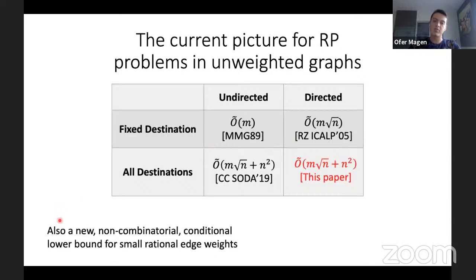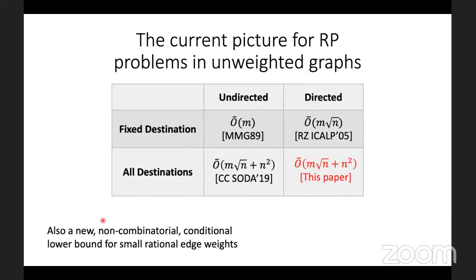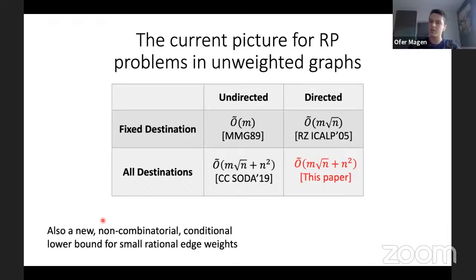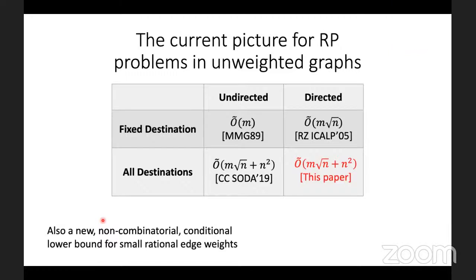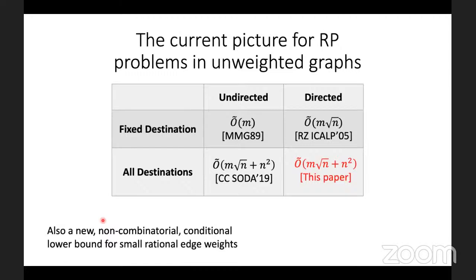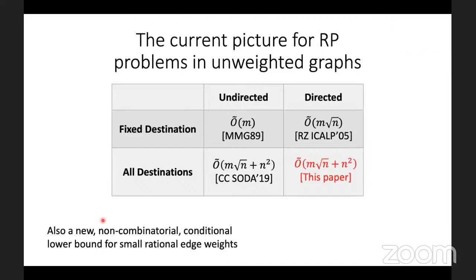The paper also provides a new non-combinatorial conditional lower bound for small rational edge weights — to the best of the authors' knowledge, the first time this scenario was considered. The algorithm is based on divide and conquer.